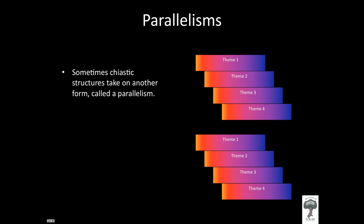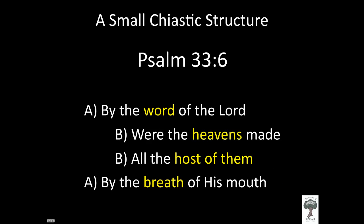In a parallelism, the themes in the first half — theme one, two, three, and four — will repeat themselves in the second half in the same order, themes one through four. So that is a parallelism. Let's look at a small chiastic structure found in Psalm 33, verse 6: 'By the word of the Lord were the heavens made, all the host of them by the breath of his mouth.' Many people say this is just poetry, when that is absolutely not the case.